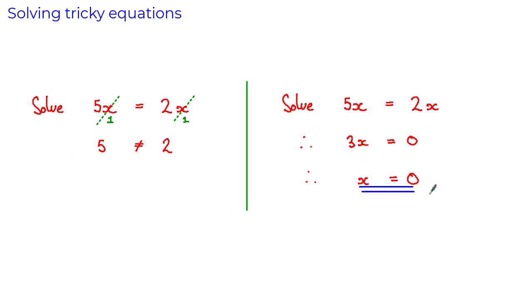Now in both these cases we use operations that are perfectly valid. Here we divided both sides of the equation by x and here we subtracted both sides of the equation by 2x. However, see how we got a completely different result based on the way we tried to solve the equation. When we use the correct method to solve this equation we saw that we ended up with an x value equal to 0.